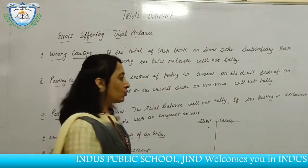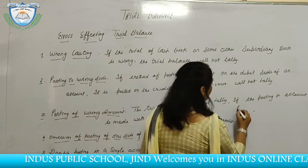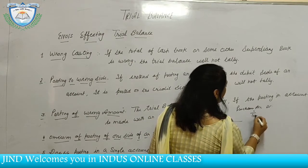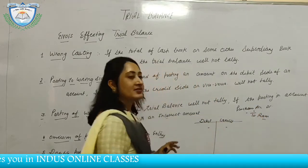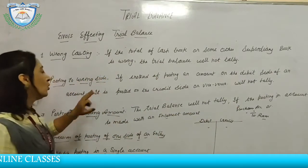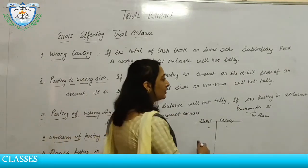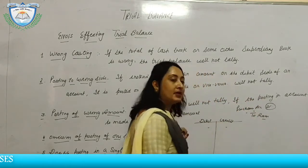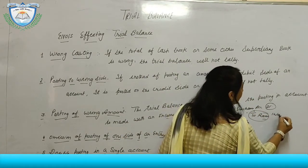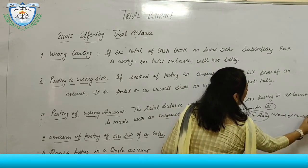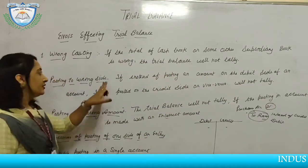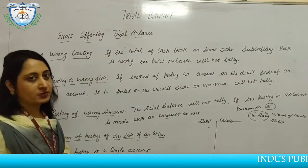For example, we have purchased goods from Ram. The correct entry would debit Purchases and credit Ram. But if instead of crediting Ram, we have debited Ram again, then the total will not tally. This error can be easily disclosed by the trial balance.